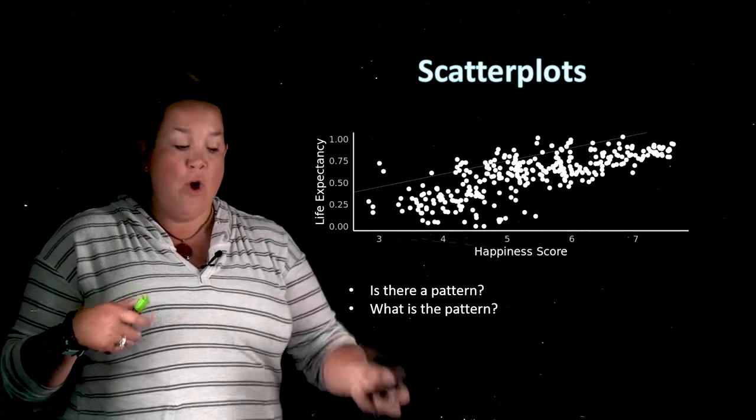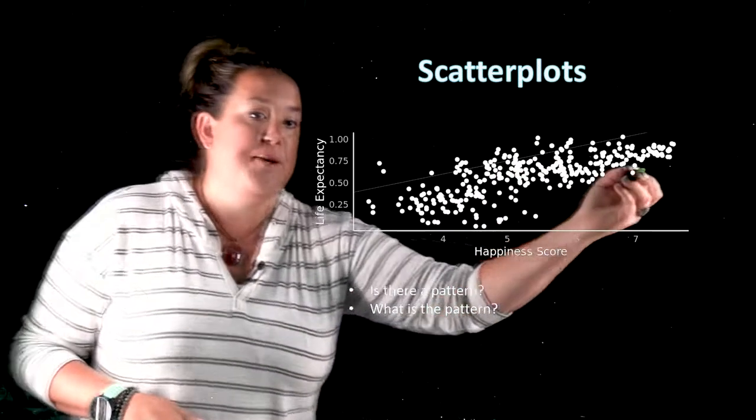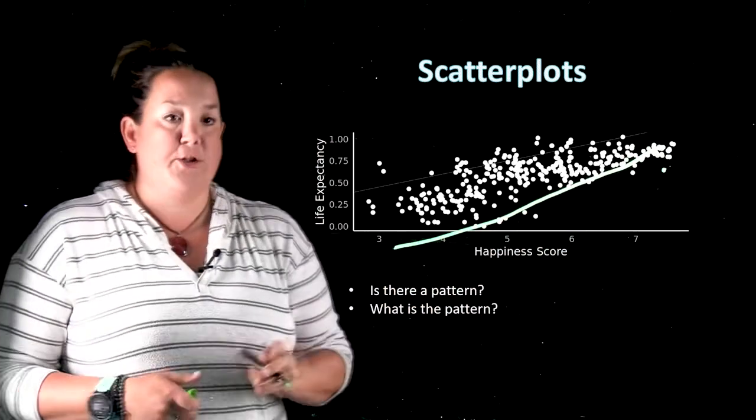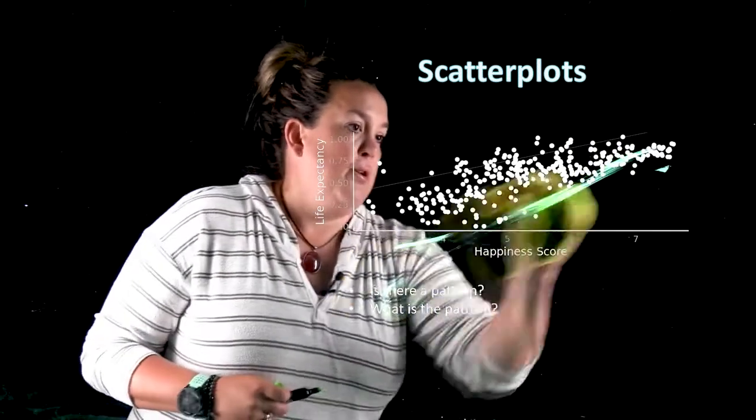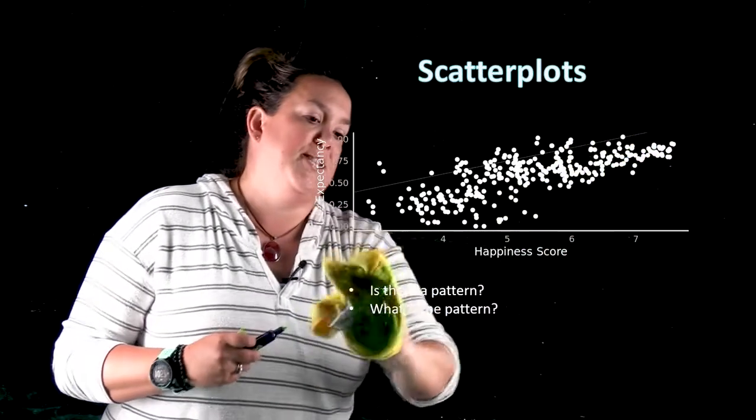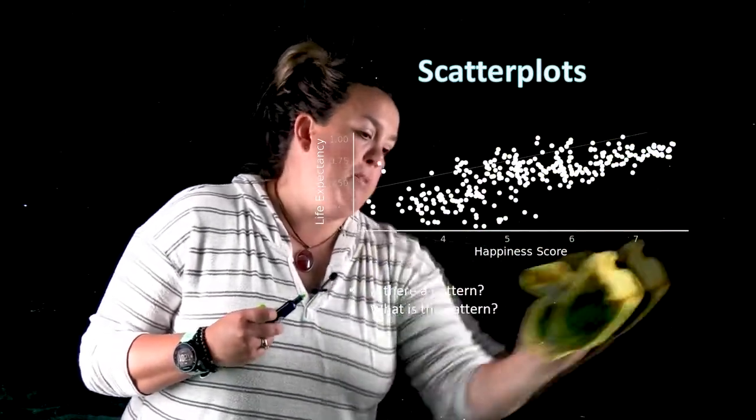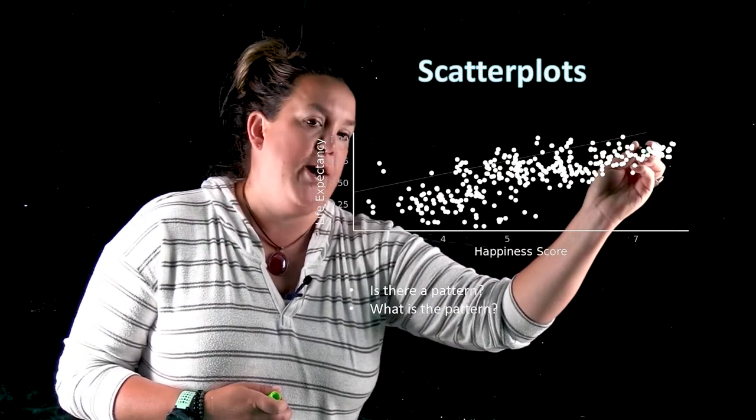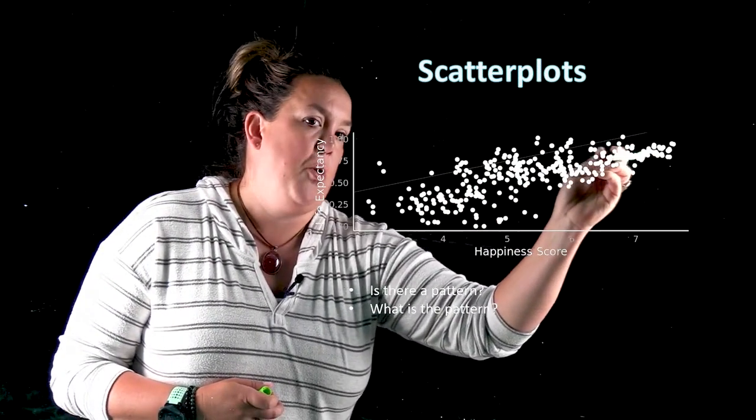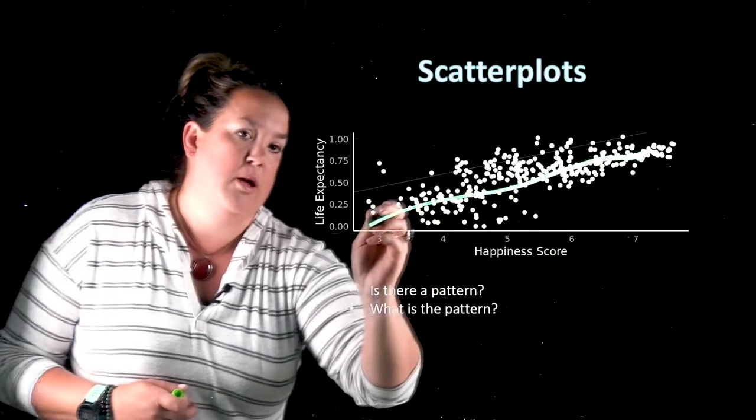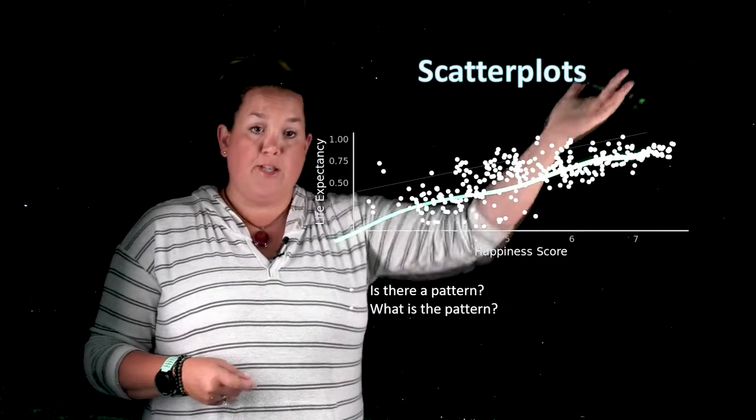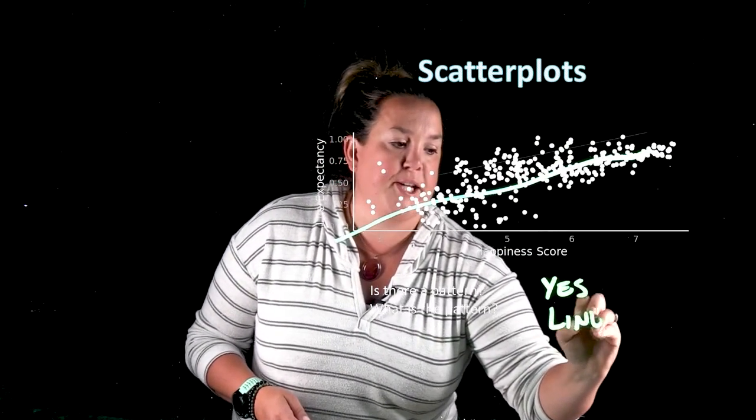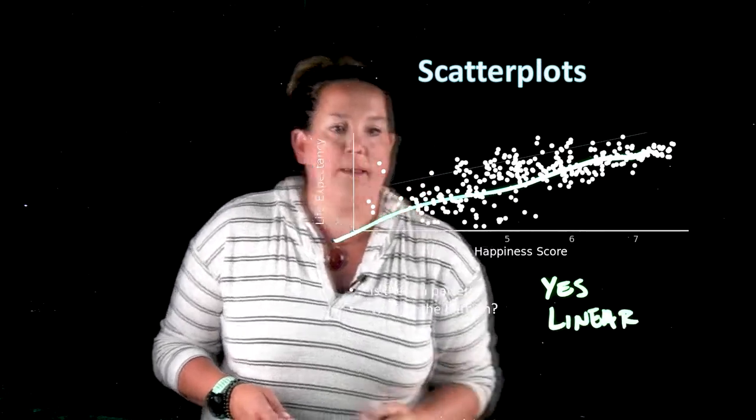The second question, what is the pattern? Well because you can kind of see a line forming here. This line will be in between or the best representation of all of the dots that we have. So that's a linear pattern. Here we're saying yes there's a pattern, and we're saying it's linear because we can see a line forming.